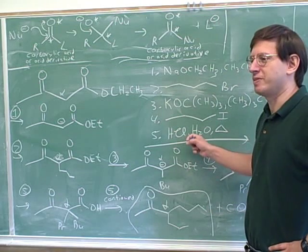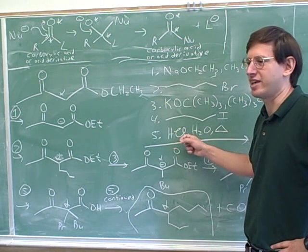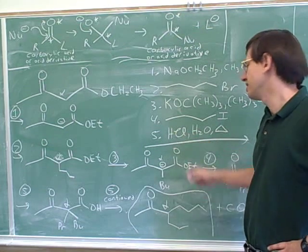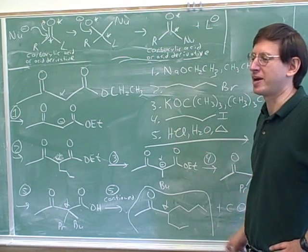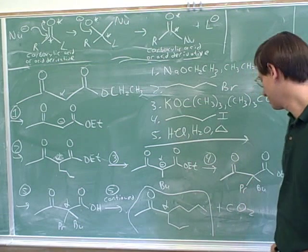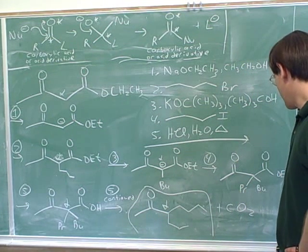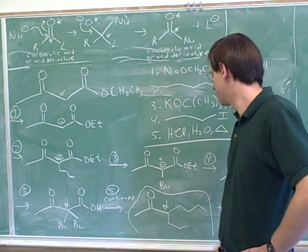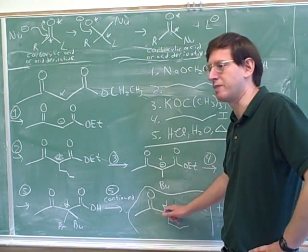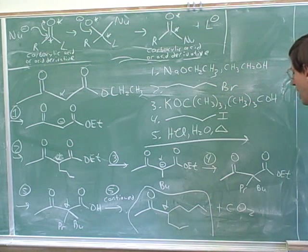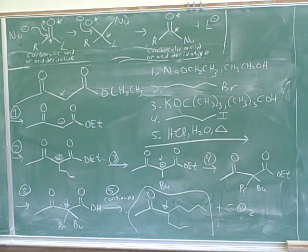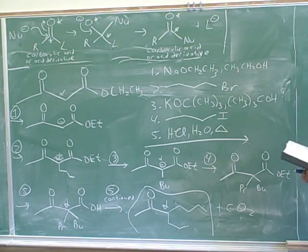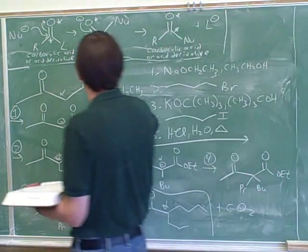If you wanted to, you could split this into two steps: first a base-catalyzed hydrolysis, then acid and heat. But it seems much simpler to just do the acid-catalyzed hydrolysis. You have to be very careful not to add or drop carbons — it helps to keep labeling the alpha carbon. The carbonyls don't need asterisking because they're not acting as electrophiles. There's a name for this overall sequence: this is the acetoacetic ester synthesis.